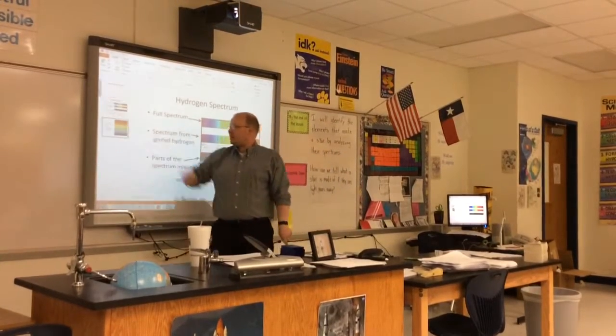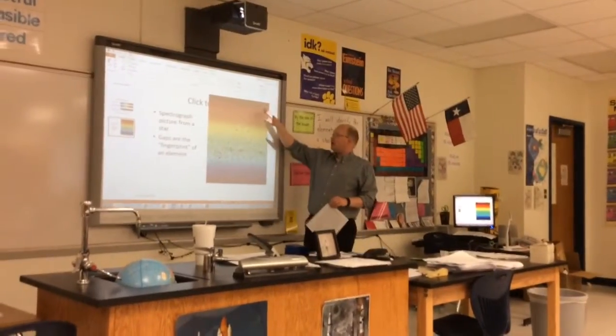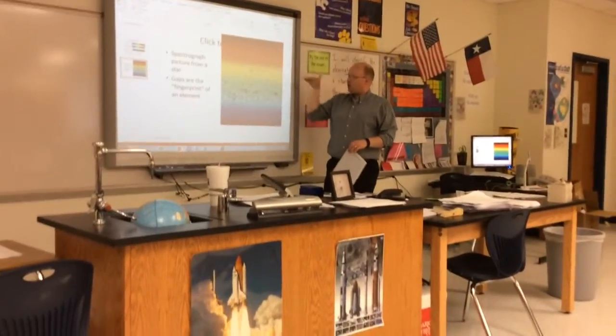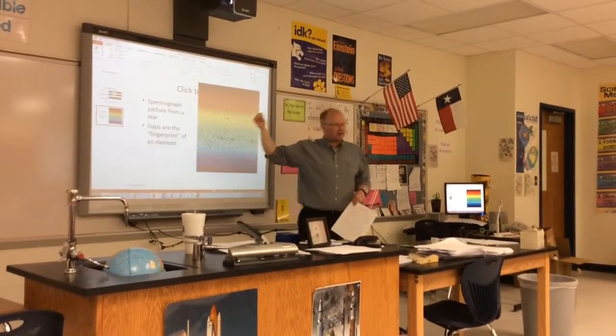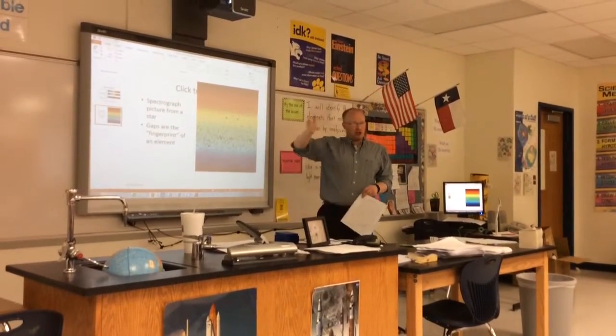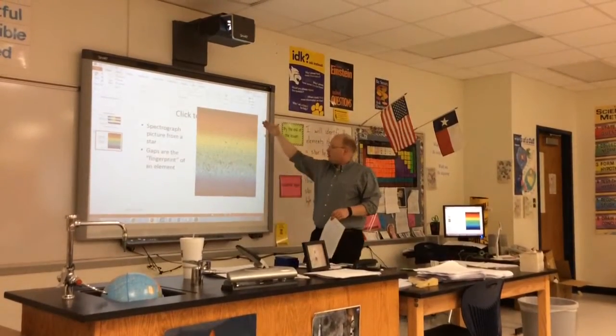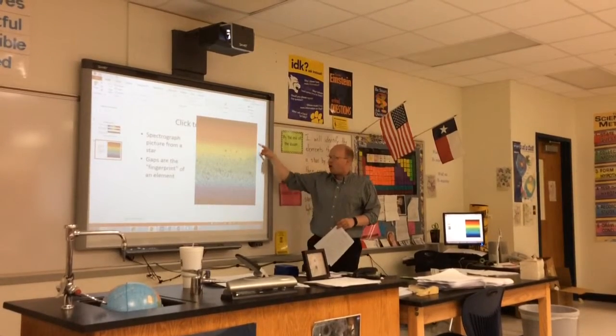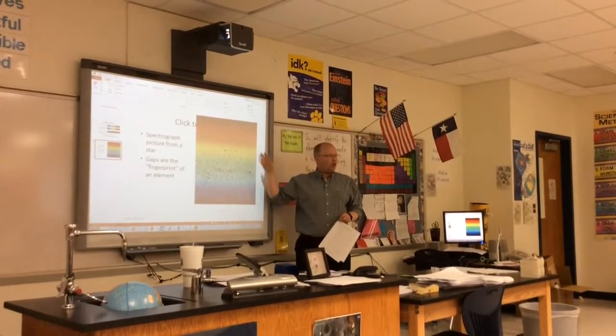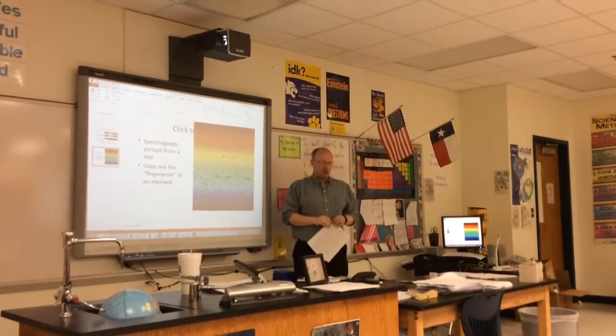Now this is the spectrum of a star, an entire star spectrum. You'll notice there are lines going this way. That's because what we have here is a spectrum that's actually about the length of this classroom that's been chunked into segments and each segment has just been set on top of each other. Looking at this spectrum from a star, you can see a whole bunch of gaps. There are way more gaps here than there are gaps in any one individual element.